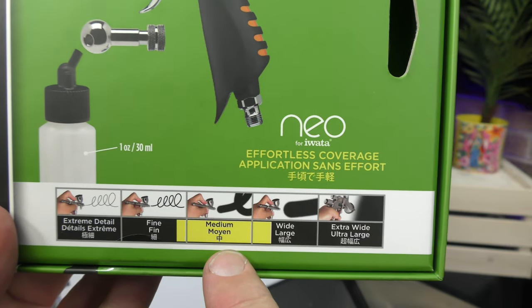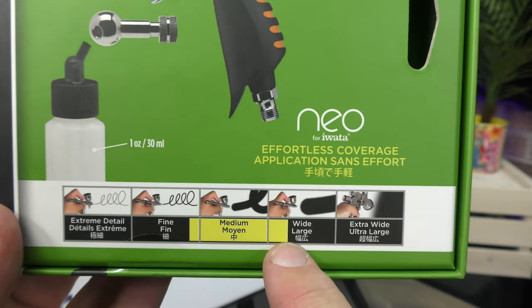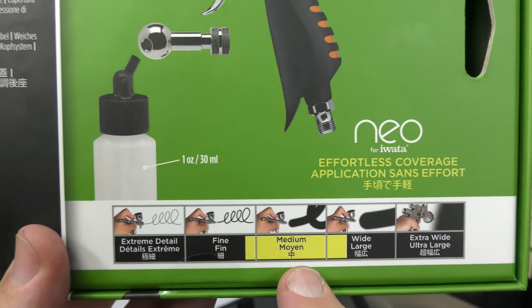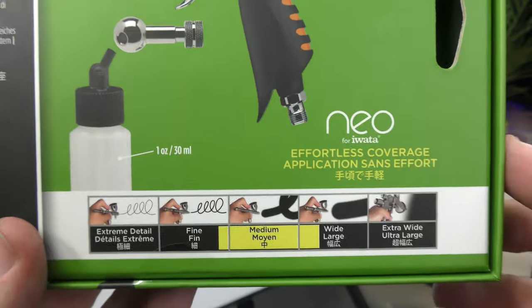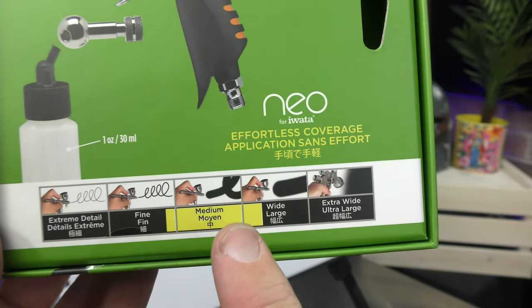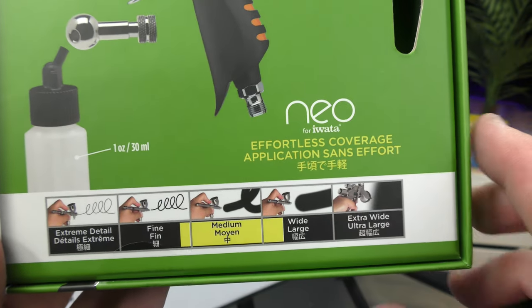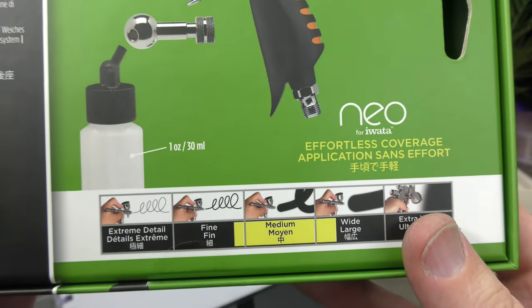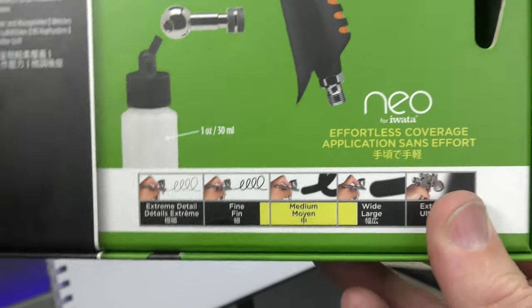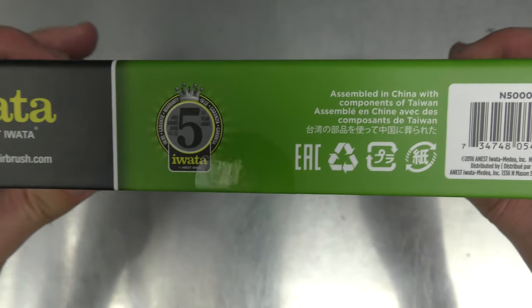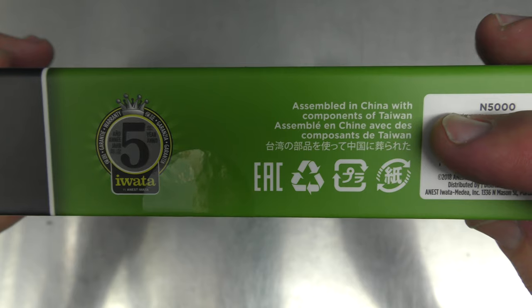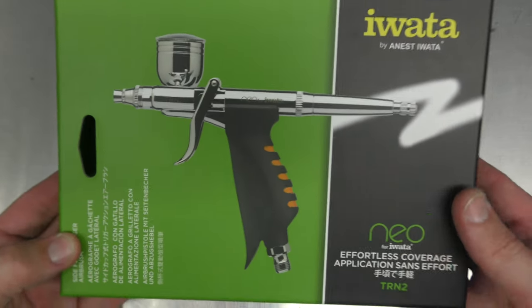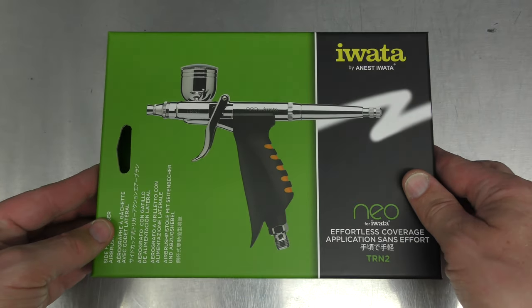Something to note is that this nozzle is in the medium range. You can see it goes into the wide large and also a little bit into the fine. I've done a bit of research because they don't tell you the nozzle size anymore on the box or in the instructions. I did find some information that suggests this would be a 0.5mm needle nozzle setup. The TRN1 is a 0.35 so that would make sense. The main difference between the traditional Iwata and these is that these are assembled in China with components of Taiwan, whereas the other Iwatas are all assembled from parts in Japan.